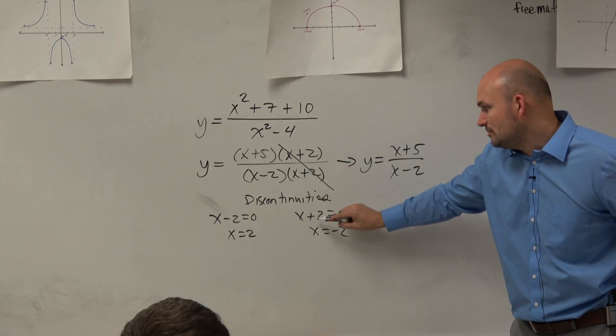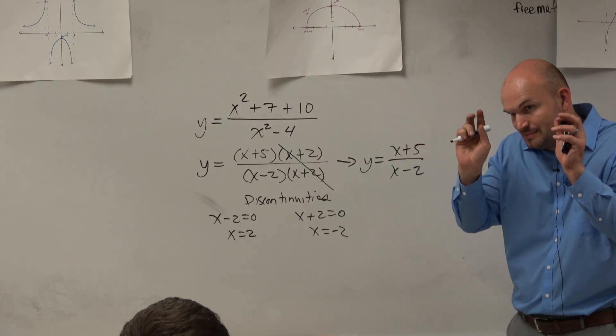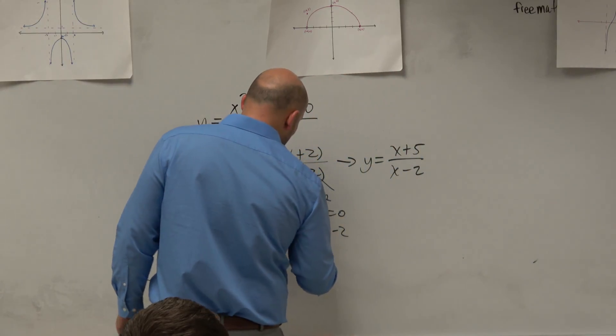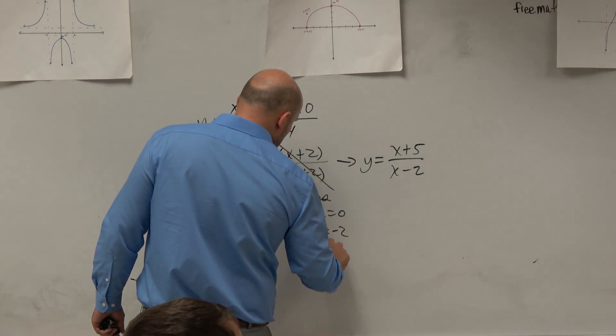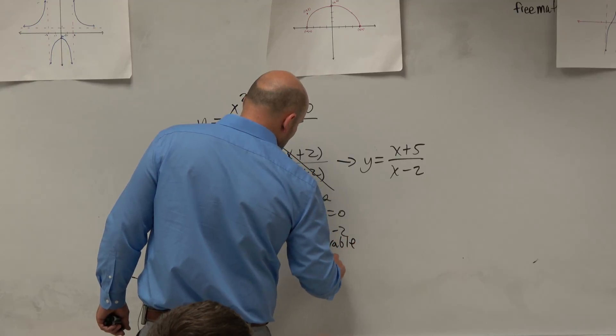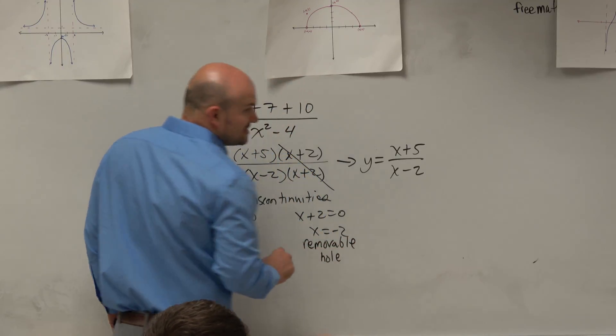Notice how x plus 2 got removed, got simplified. So that is a removable discontinuity, also known as a hole.